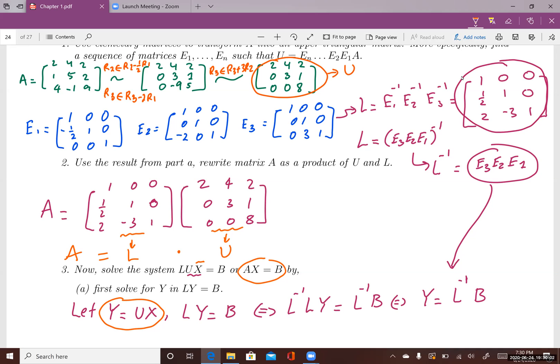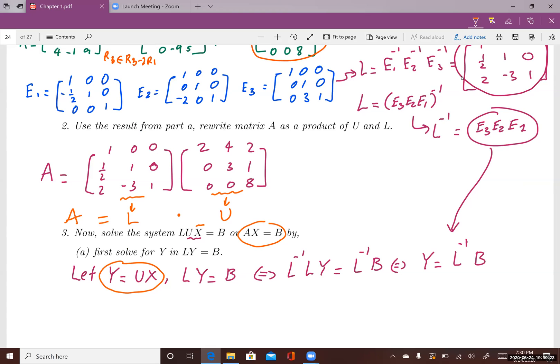We know that elementary matrices are non-singular. So the product of non-singular matrices are non-singular. In fact, I can find L inverse, and L inverse is E3 times E2 times E1. So I know L is non-singular. I can multiply its inverse matrix to both sides to solve for Y. So I have my Y.